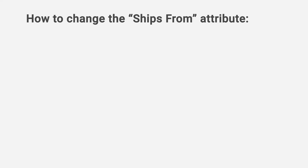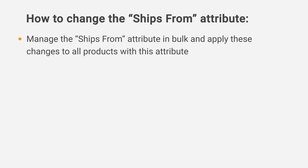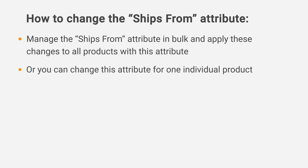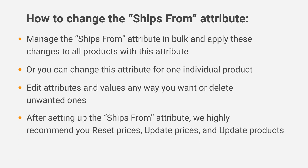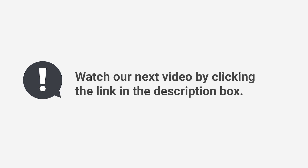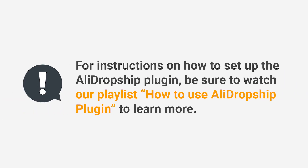Let's do a quick overview of what you need to do to change the ships from attribute and make sure prices and variations on your site stay correct. Manage the ships from attribute in bulk to apply changes to all products, or change this attribute for one individual product. Edit attributes and values any way you want, or delete unwanted ones. After setting up the ships from attribute, we highly recommend you reset prices, update prices, and update products. To learn more about shipping, watch our next video via the link in the description. For instructions on setting up the AliDropship plugin, watch our playlist 'How to Use AliDropship Plugin'.